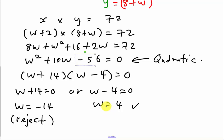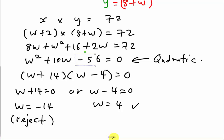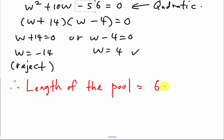So I take the positive value: w equals 4 meters. But this is not the final answer — the question asks for the length of the pool, not the width. If you stop at w you might lose marks. The length equals w plus six, so the length equals 4 plus 6, which is 10 meters. Therefore, the length of the pool is 10 meters.